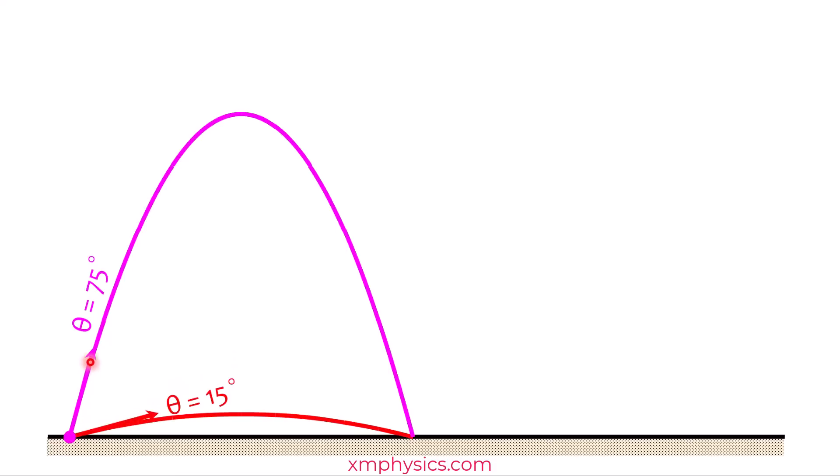So they are launched at the same speed, u. The one that's launched at the lower angle would have a higher horizontal velocity. That means this projectile moves forward at higher speed than this projectile.